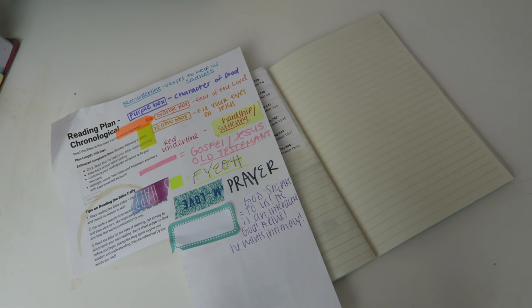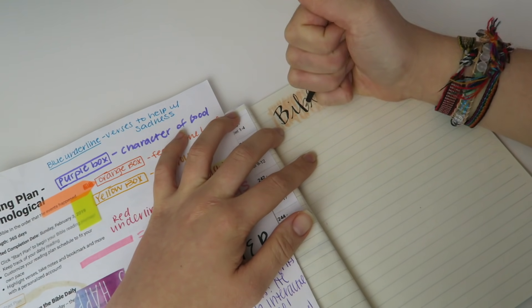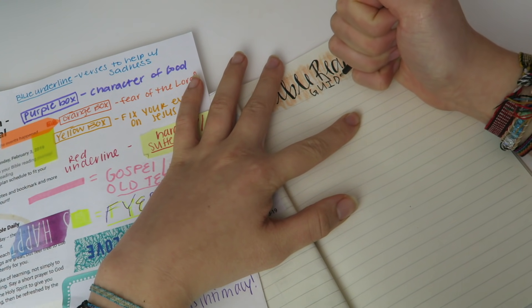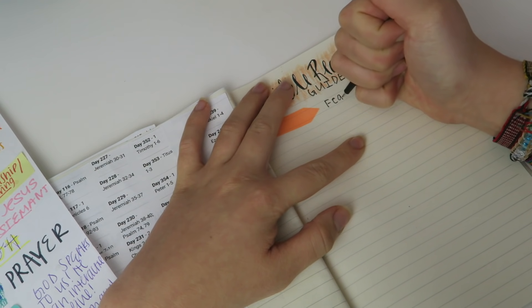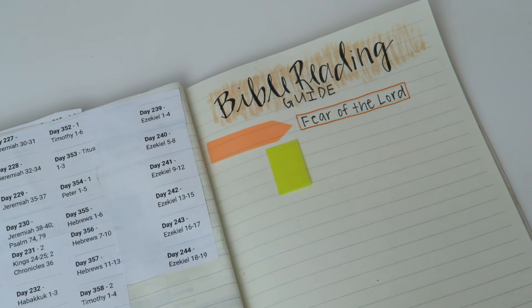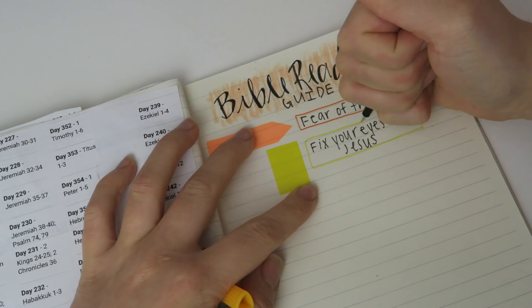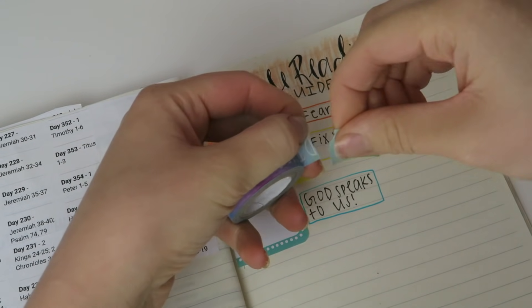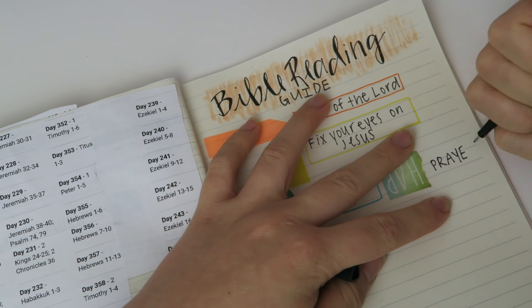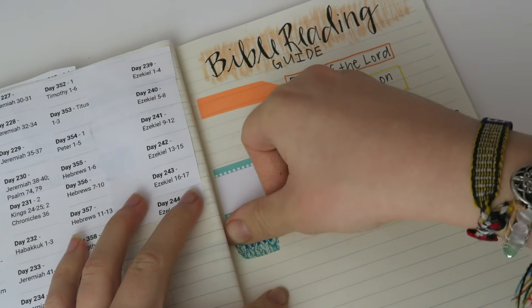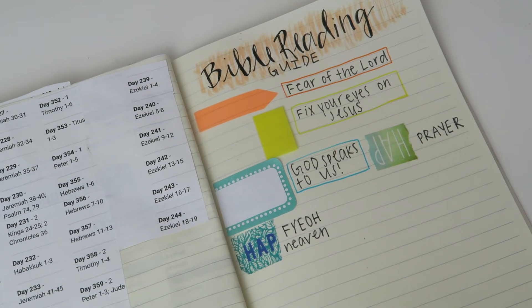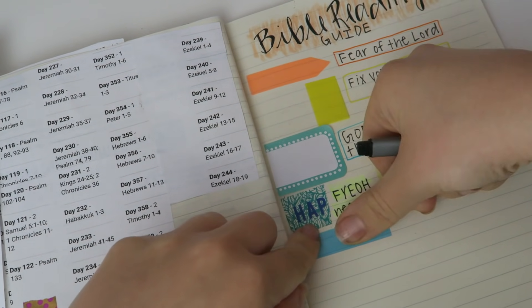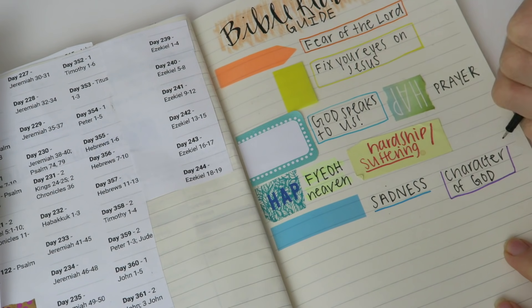All right, guys, and my next section for Bible reading is a guide. So when I read my Bible, I like to highlight and put in sticky notes and tabs. And so in here is just a little guide. So like yellow tab is fear of the Lord. Actually, orange tab is fear of the Lord. Yellow is fix your eyes on Jesus. And so I just have it organized in my bullet journal so that I know what is what when it comes to Bible reading. I'm still planning on adding more tabs, but I just started reading through my Bible again. So I'm excited to add more to this section.